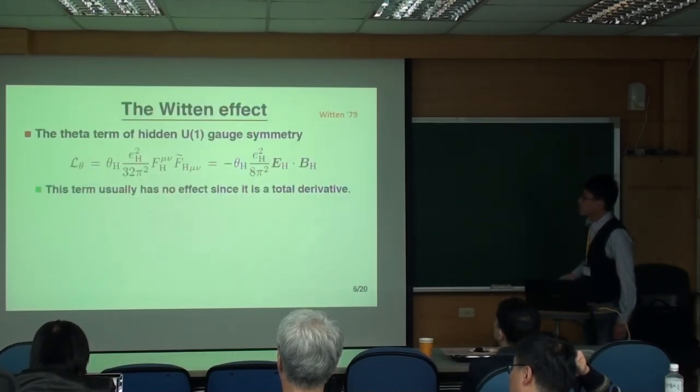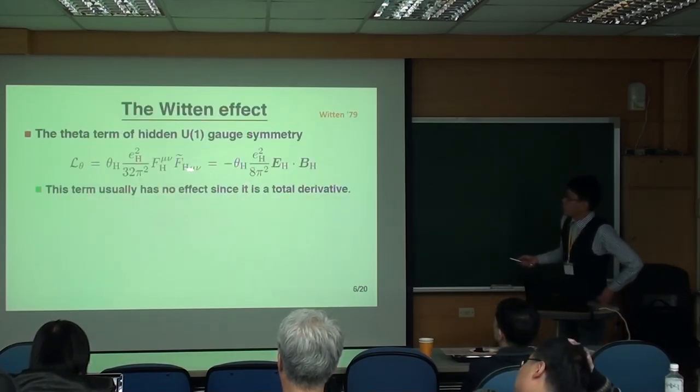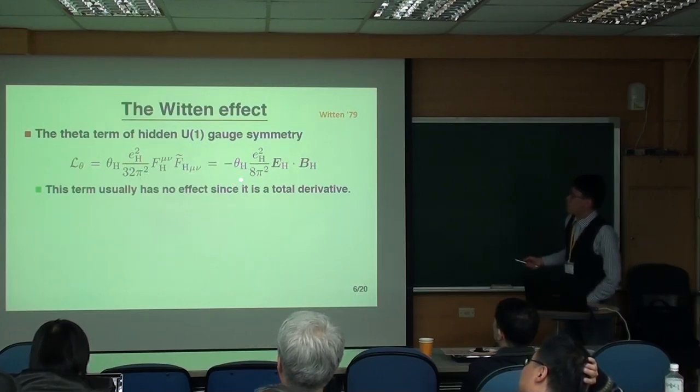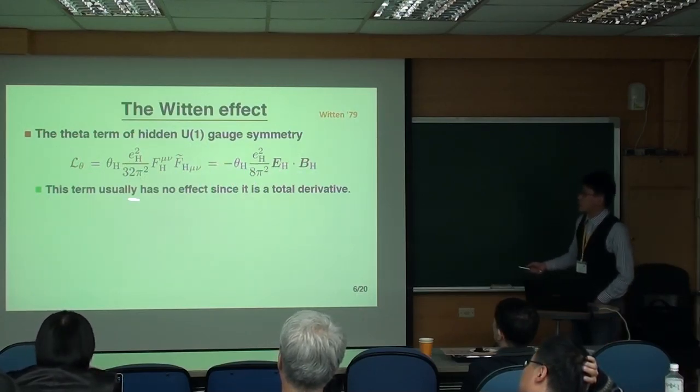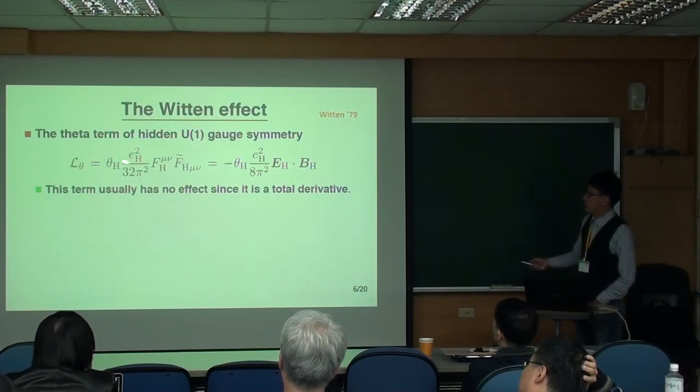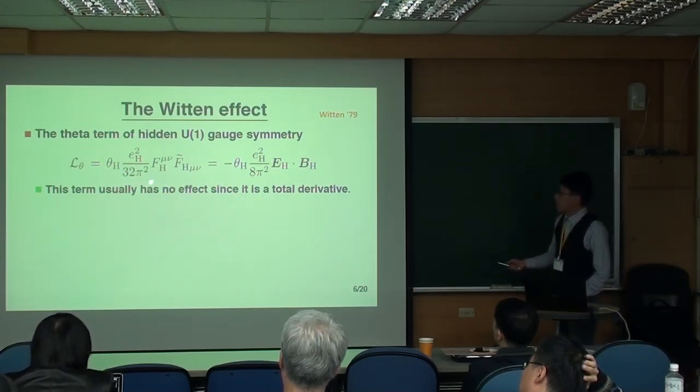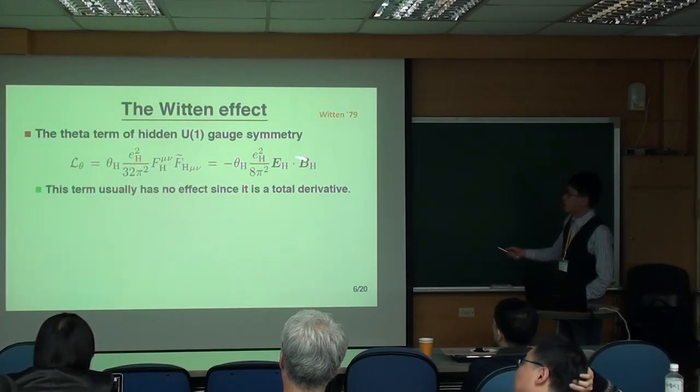So what is the Witten effect? Because now we have the U(1) gauge symmetry, actually we can write down this theta term. And you can rewrite this theta term in this form. However, this theta term usually has no physical effect because we can rewrite it into a total derivative, which is nothing but a surface term.